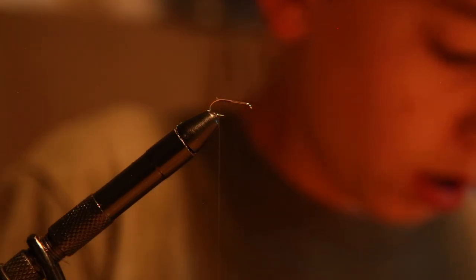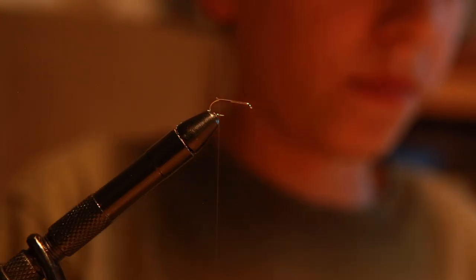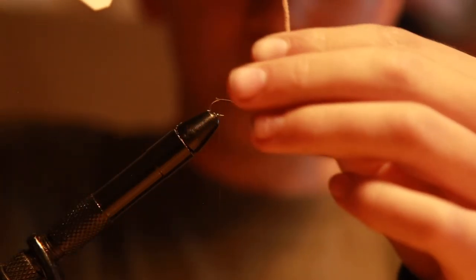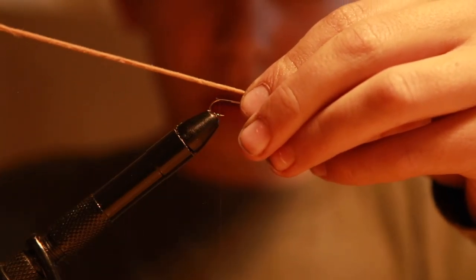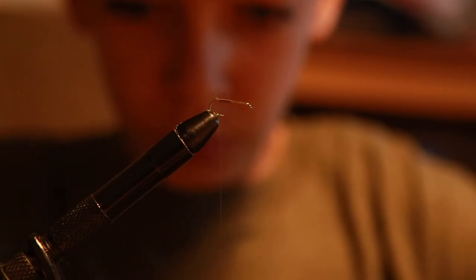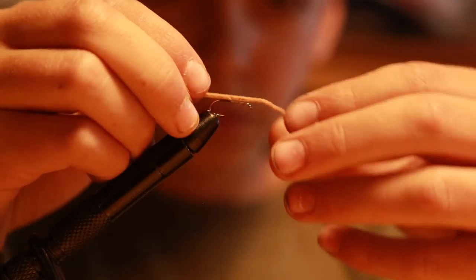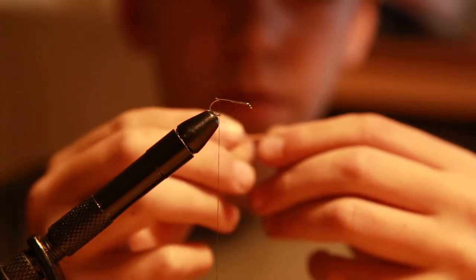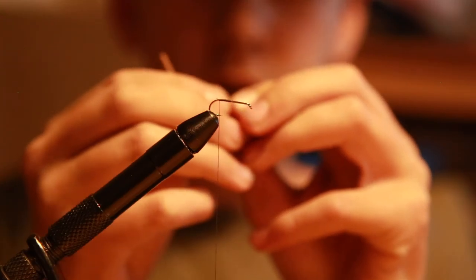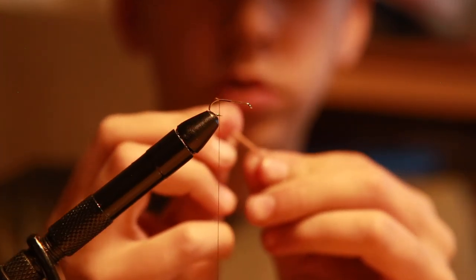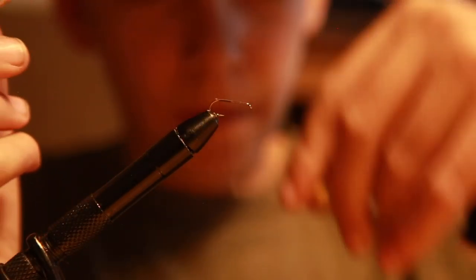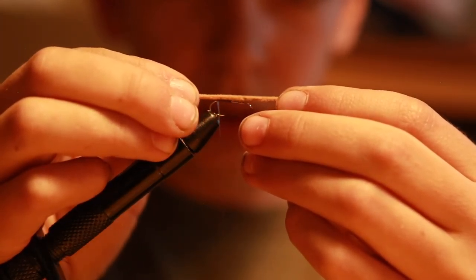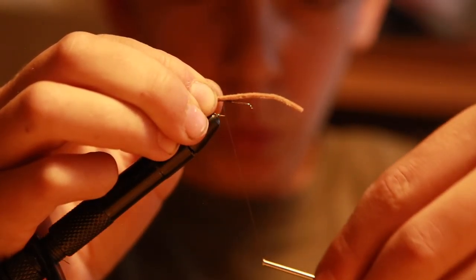You want to measure three shank lengths long. Shank is the long part of the hook: one, two, three. Clip it. Since they usually come in a spool which makes them bend like this, pull it and straighten it out. It should straighten out over time. Then cover up your tag end there and tie it in. You want to make sure there's a shank length on the back and the front.